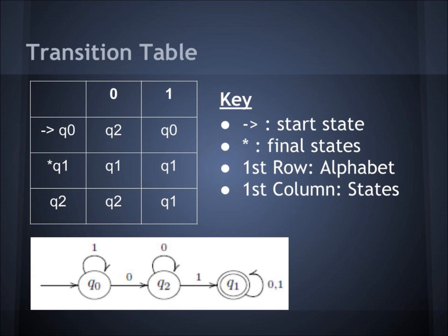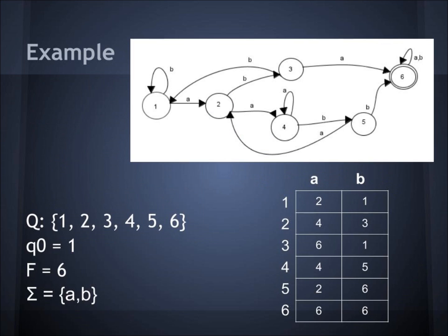A transition table is a table representation of a machine. The arrow represents a start state, the asterisk represents the final states, the first row is the alphabet, and the first column contains the states.